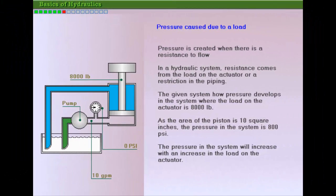Pressure is created when there is a resistance to flow. In a hydraulic system, the main resistance usually comes from the load on the actuator. However, resistance to flow is also present in all conveyors such as pipes and hoses, as well as components, fittings, and such.